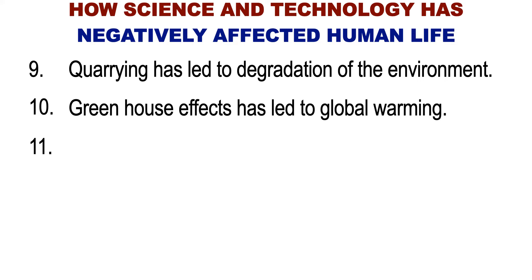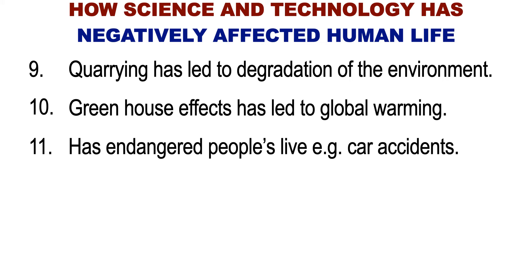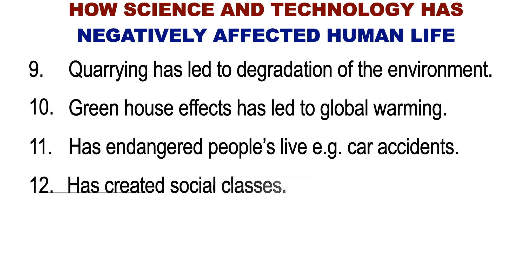Greenhouse effect has led to global warming. Science and technology has endangered people's lives, for example through accidents. Another example is skyscrapers that can collapse on people. Science and technology has created social classes, for example the class of the rich and the poor.